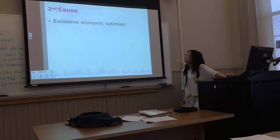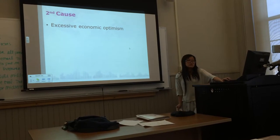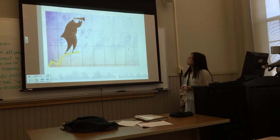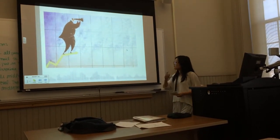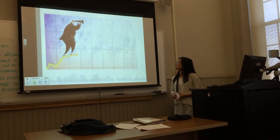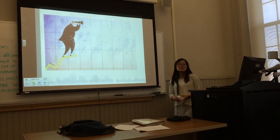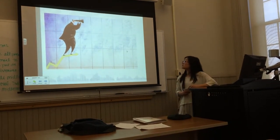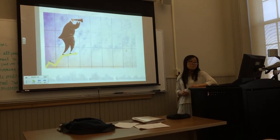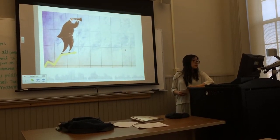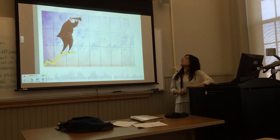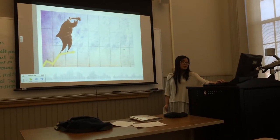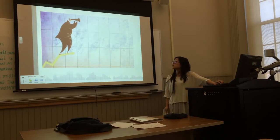The second cause is excessive economic optimism. As you can see in this picture, it shows that people were too optimistic and bought stocks in the stock market. But once the stock price dropped, they started to sell stocks when the price was still high, in order to avoid losing a lot of money in the stock market.